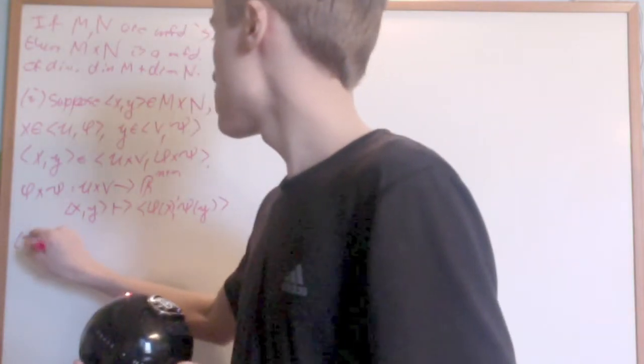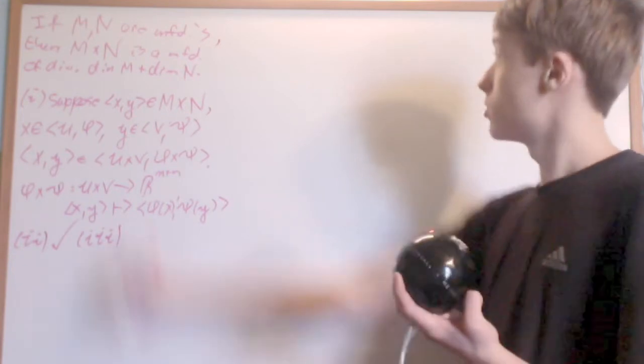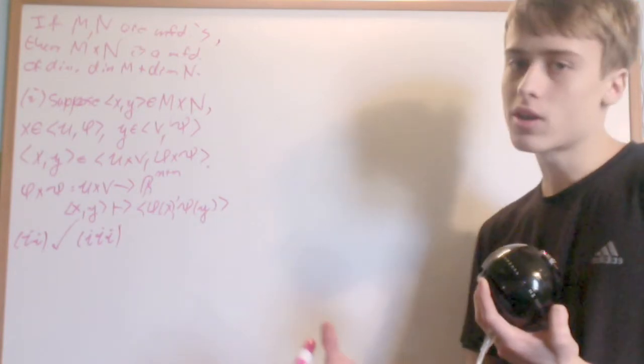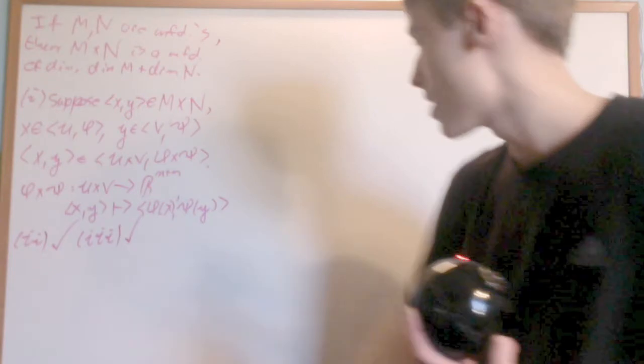The second condition is that it's Hausdorff. The product of Hausdorff spaces is Hausdorff. Number three: it has a countable basis. Well, M and N have countable bases, so I just take the product basis, and the product basis of two countable bases is countable.